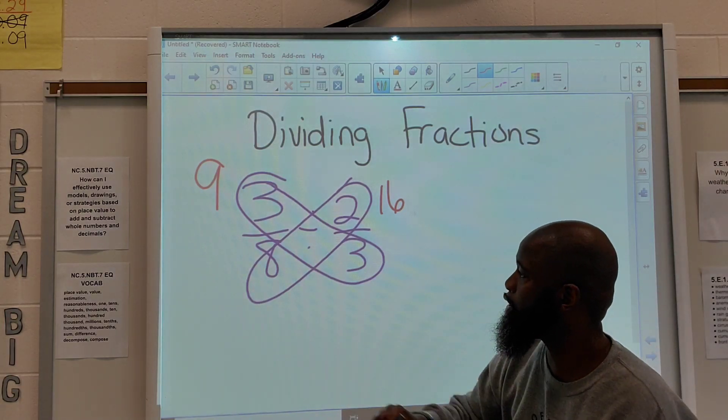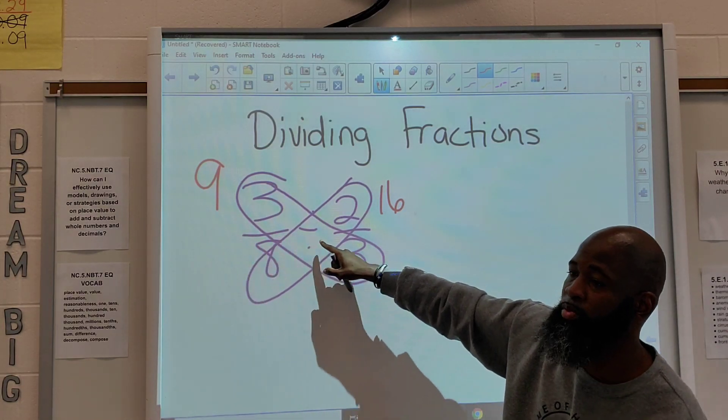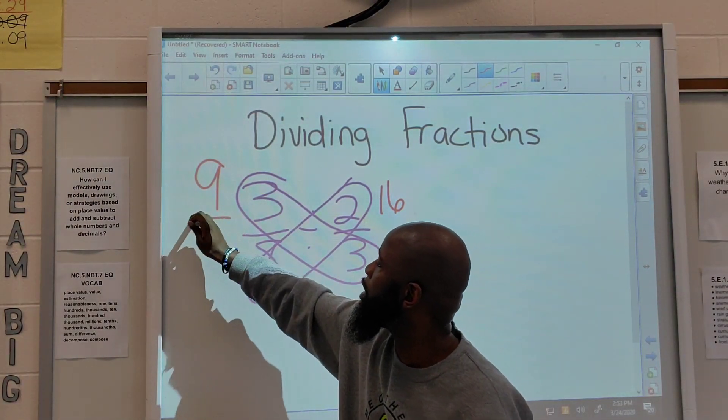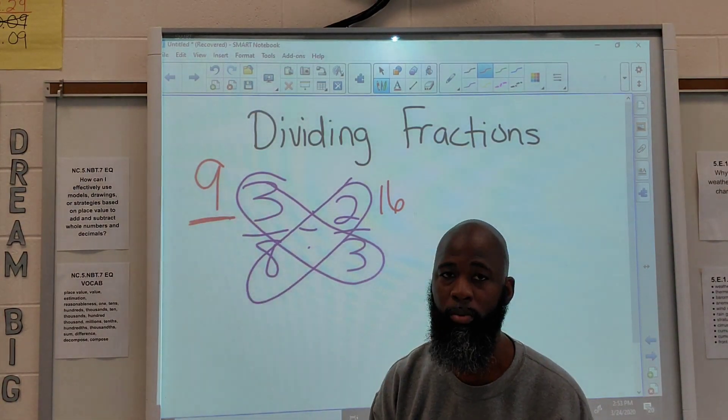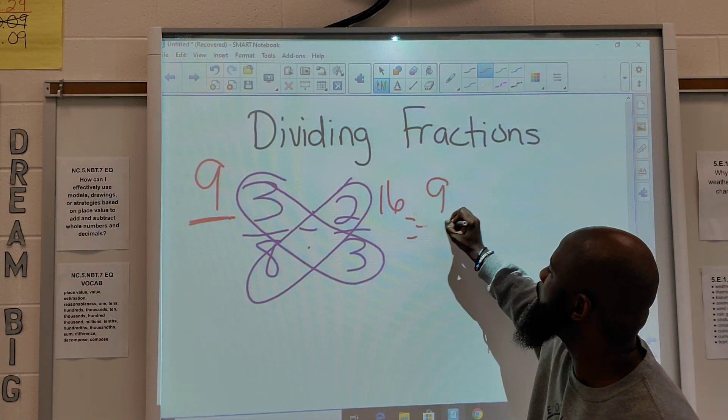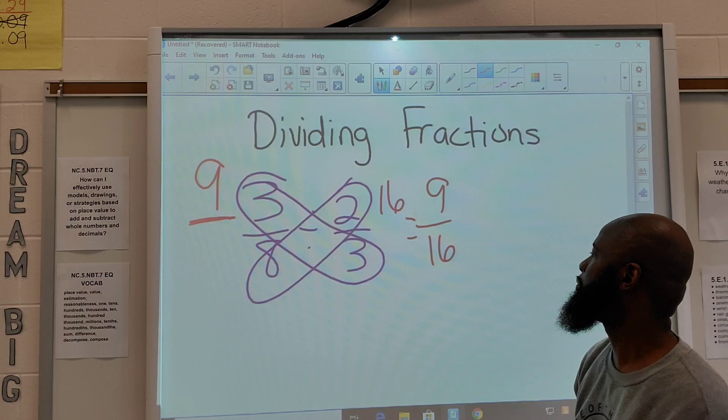Now, you take your products from the two numbers that you multiply and you create your fraction. The number on this side is always your numerator. So, we put our fraction together. This equals 9 over 16.